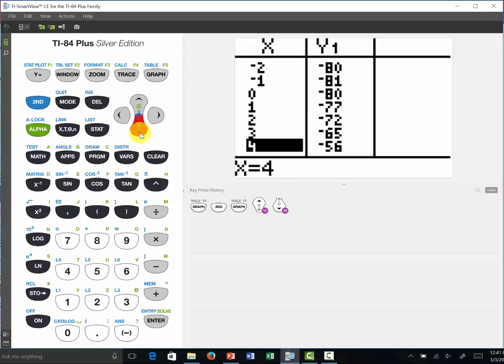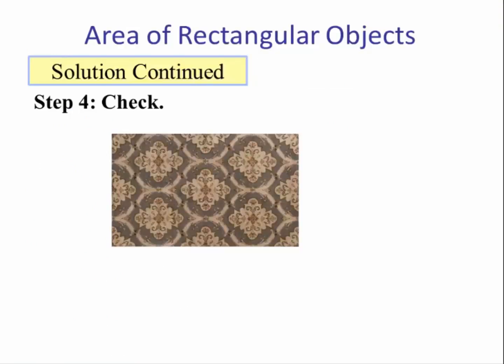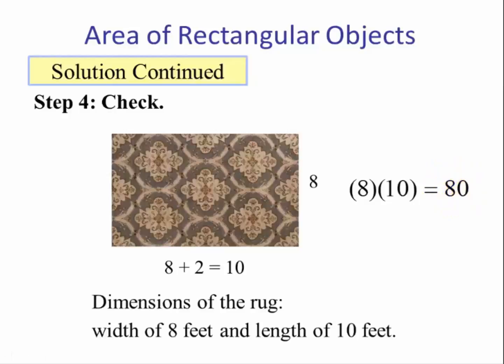So that is an x-intercept, but in terms of this problem, that doesn't make sense. And when x is 8, y is 0, so our x-intercept is 8. So we check it: the width is 8 and the length is 8 plus 2, which is 10. If we use our area formula, we see that 8 times 10 is 80, and it checks. So the dimensions of the rug are a width of 8 feet and a length of 10 feet.